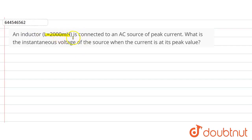inductor L = 2000 millihenry is connected to an AC source of peak current. What will be the instantaneous voltage of the source when the current is at its peak value? So when current will be at its peak value, what will be the instantaneous voltage?